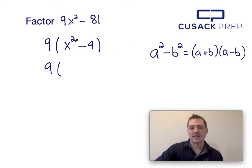If a squared is x squared and b squared is 9, I can figure out what a and b are by taking the square root of x squared and the square root of 9. The square root of x squared is just x and the square root of 9 is just 3. So this factors into x plus 3 times x minus 3.